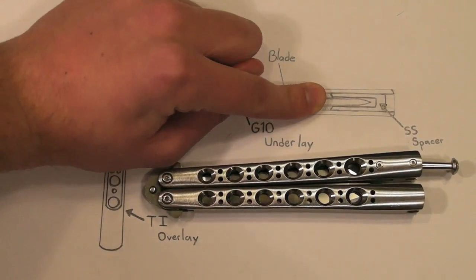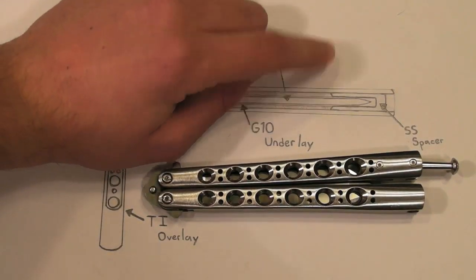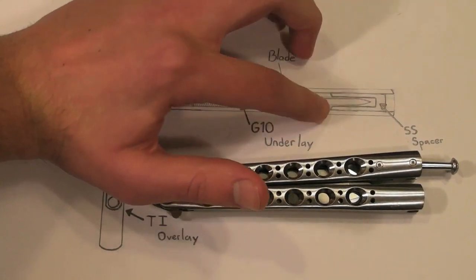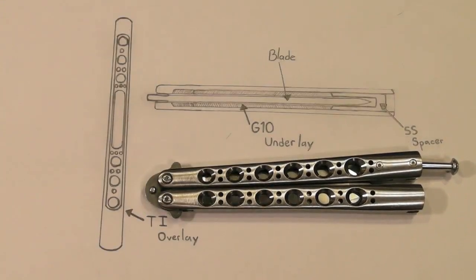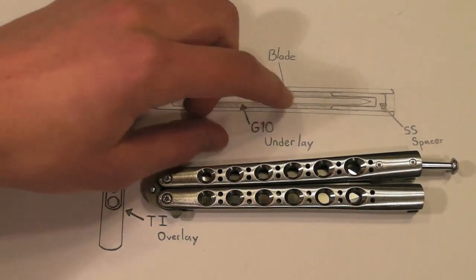Now I'm no knife maker, but I don't know exactly what materials are going to cause which weight and which balances and everything, so that could change to a titanium spacer, don't know.